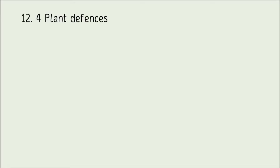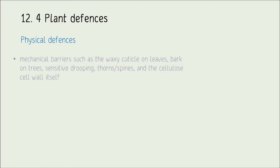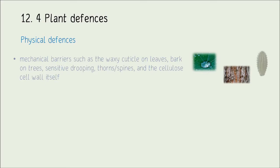Section 12.4 looks at plant defences. Plants don't have a specific immune system like we do — it's more basic but we still need to know about it. Plants have mechanical barriers such as the waxy cuticle of leaves, which is in most cases an impermeable layer preventing pathogen entry. Other barriers include bark on trees, thorns or spines on cacti deterring herbivores, sensitive drooping responses such as in the mimosa plant, and the cell wall itself.